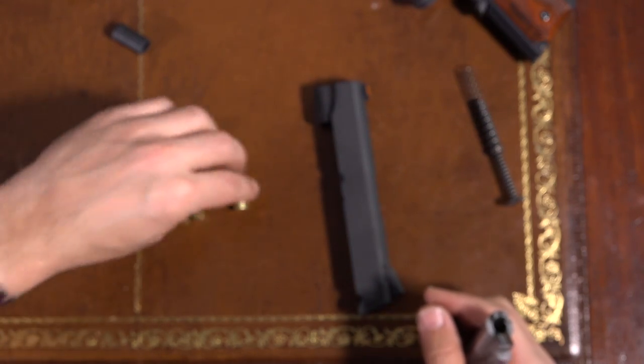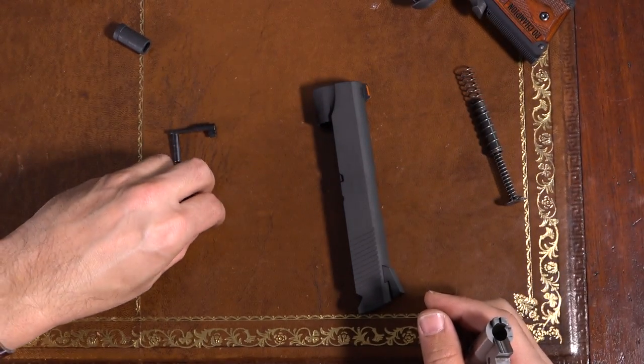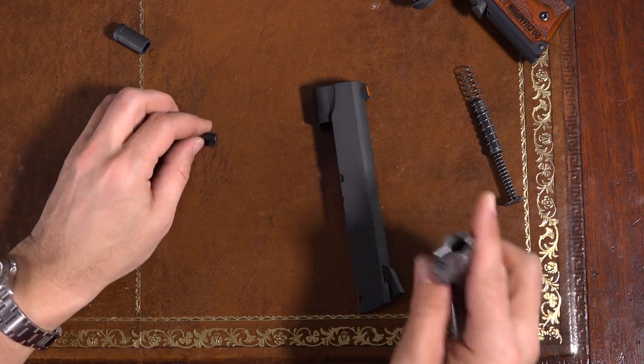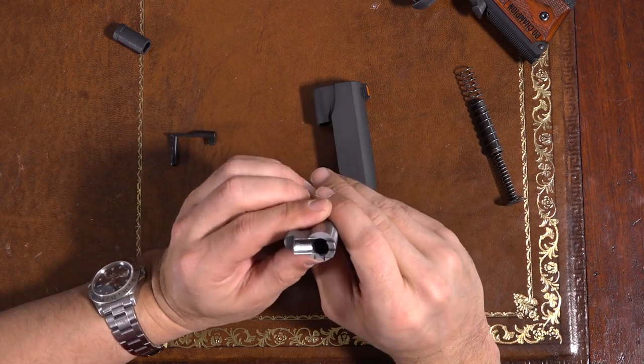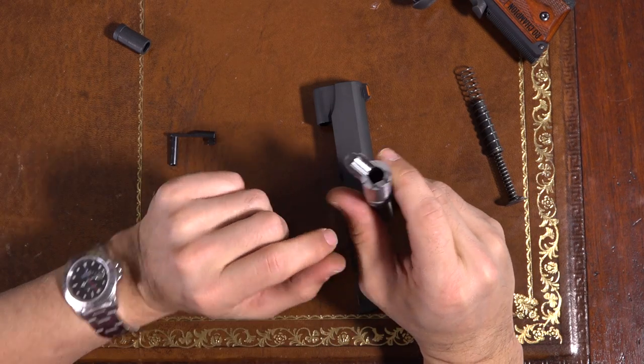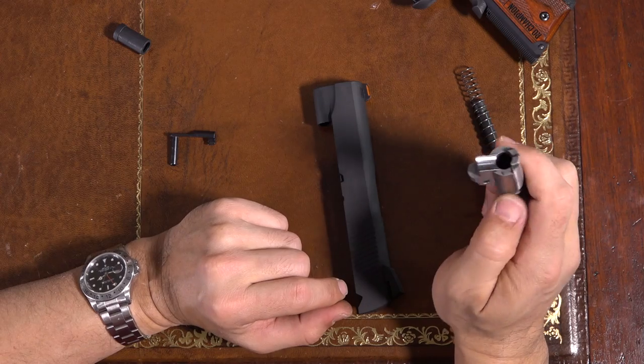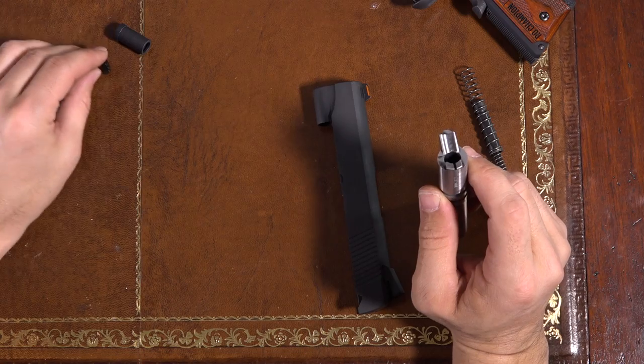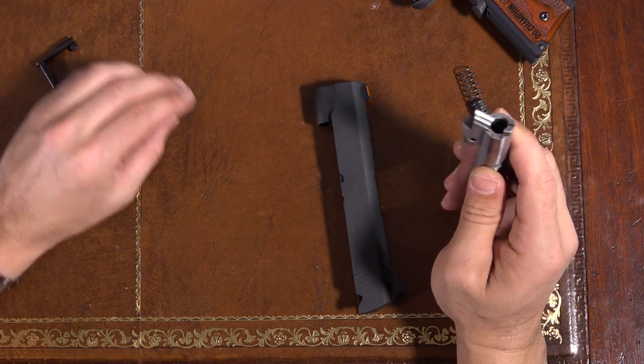So to fix that, I did order a Lee undersized resizing die that's supposed to reach down a little bit further. But I'm still probably going to ream this out 1,000th or so. I don't want to make it any deeper. The headspace is good, the rifling is in good position. But I do want this a little bit more forgiving for my reloads. If you're using factory ammunition, I'm sure that's not going to be a problem for you.